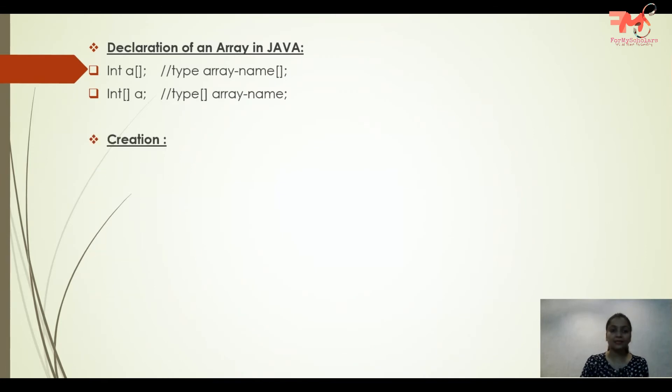Next is creation. When creation happens, space is allocated in memory for that array. How do we create an array? a = new int[10]. This means the name of the array, then 'new' is the keyword we already discussed, and then the type of the array and the size of the array. In this way you can create an array.